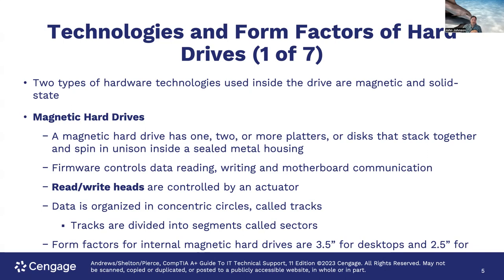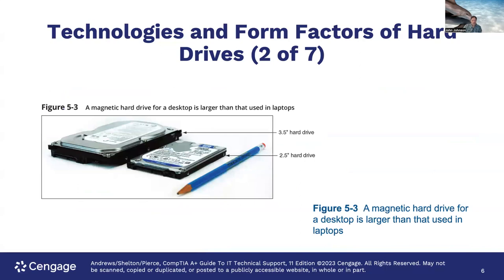Form factors for internal magnetic hard drives: three and a half inch desktop drives go into a desktop, usually in the front bay. Two and a half inch drives are smaller and designed for laptops, but you can also put them into enclosures. If you have a failed laptop you've decided to junk, you can take out that little hard drive, find an enclosure for it, and use it as an external USB-connected drive for your desktop.